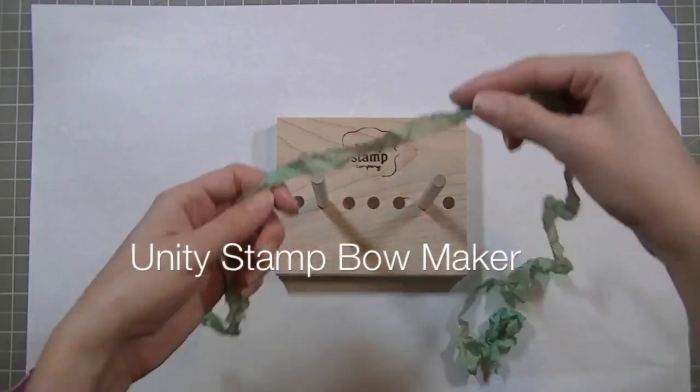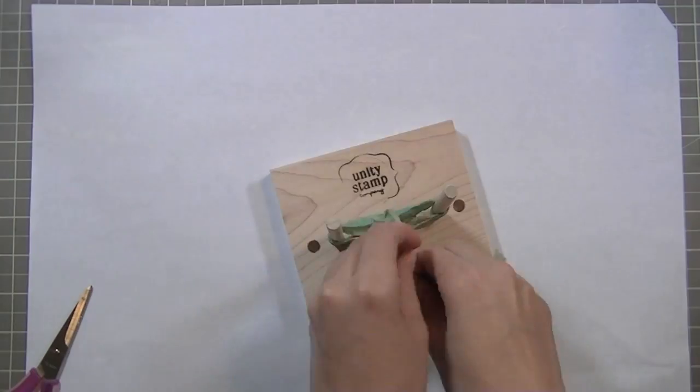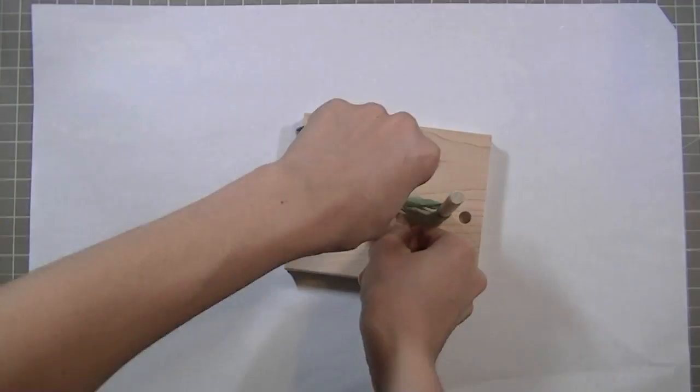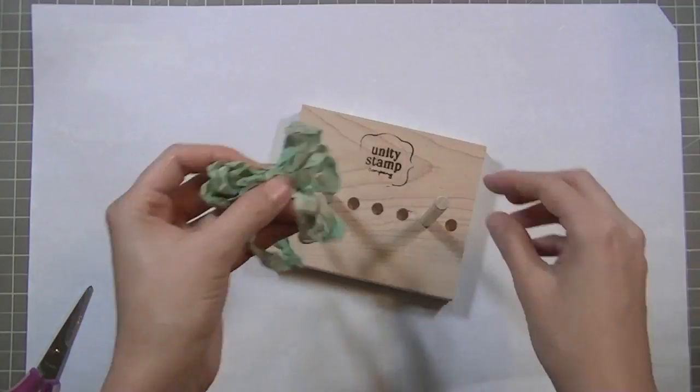Now I'm using my Unity Stamp Bow Maker and I'm using that crinkled ribbon that's already dry and I'm making a multi-layered bow with lots of loops.